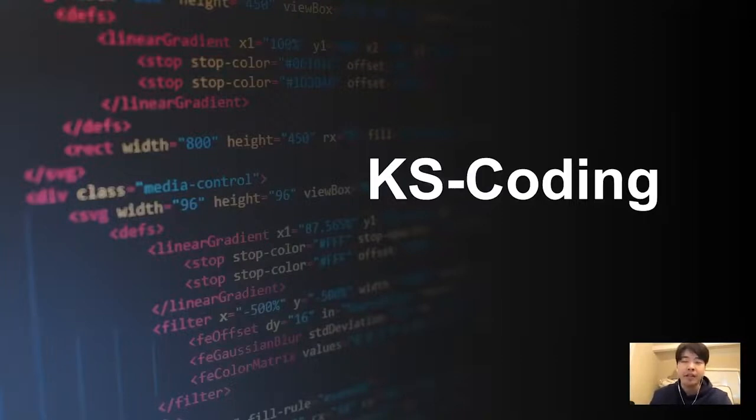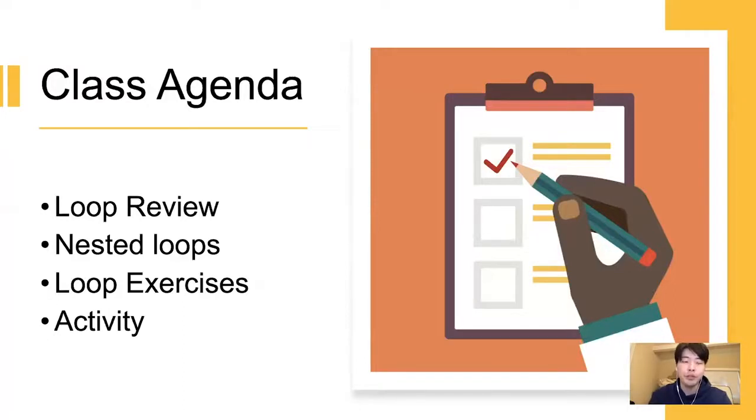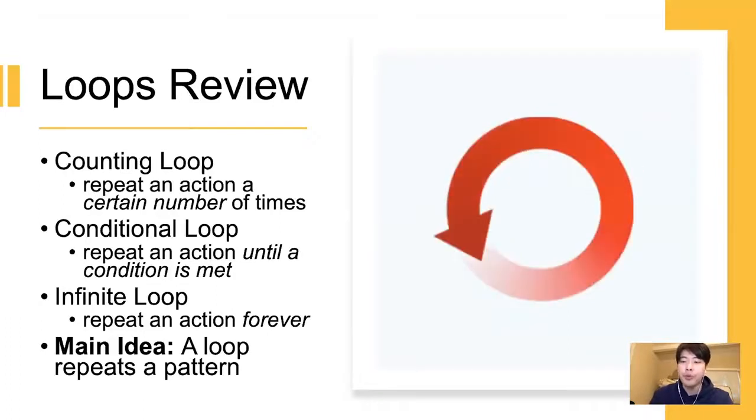So today, as our last topic, we'll review loops and talk about nested loops. We'll do some exercises and then our last activity in MakeKit. So loops review. We talked about three types of loops: counting, conditional, and infinite. Counting loops are usually referred to as for loops, and conditional loops are usually referred to as while loops, like while something's happening.